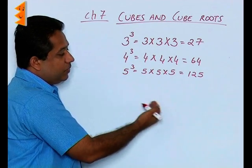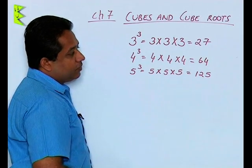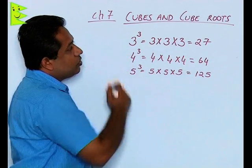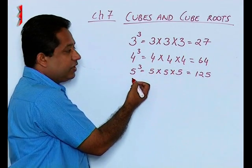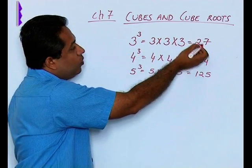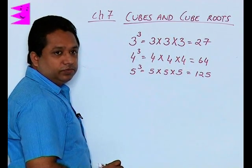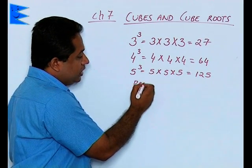So any number can be given to us, we can multiply it three times, we get the cube of that number. The reverse of this is called the cube root. Now if we are asked to find out the cube root of 125, that will be 5. The cube root of 64 will be 4, and the cube root of 27 will be 3.